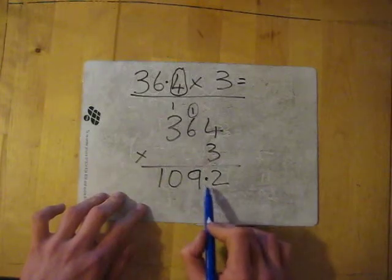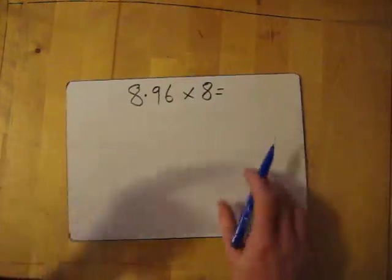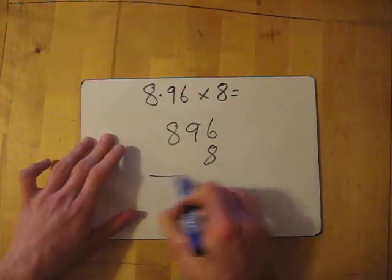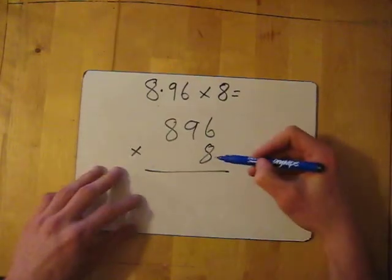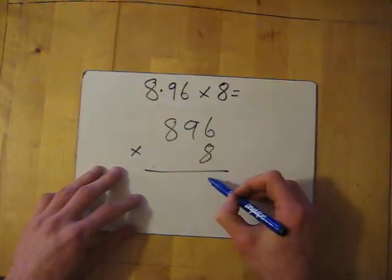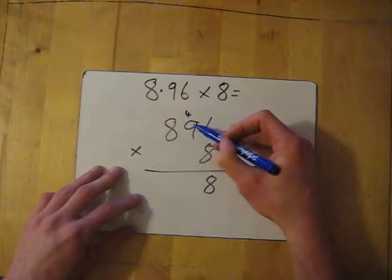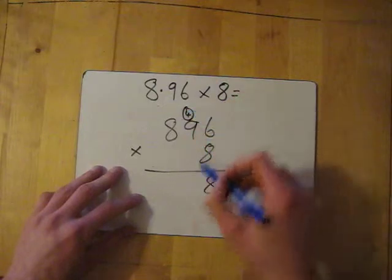Let's try another one: 8.96 times 8. Number one, forget about the decimal point, so 896 times 8. We can all do this: 8 times 6 is 48, put down the 8, carry the 4. 8 times 9 is 72, add the 4, that's 76.